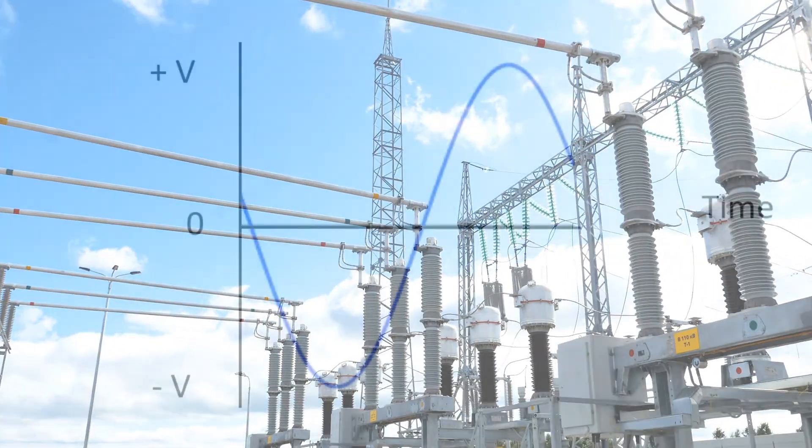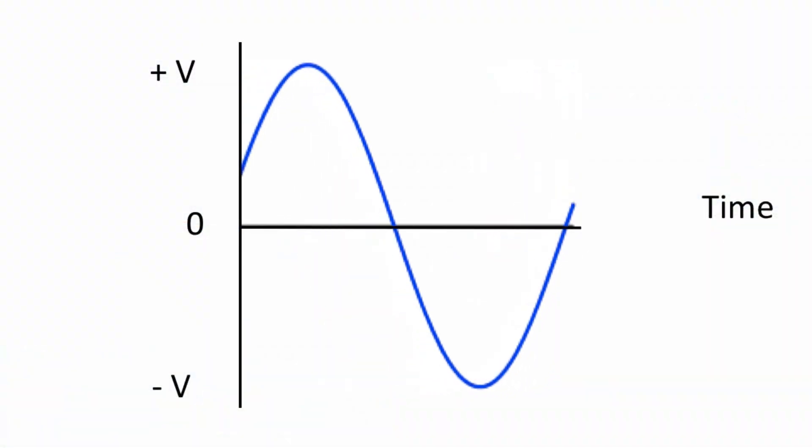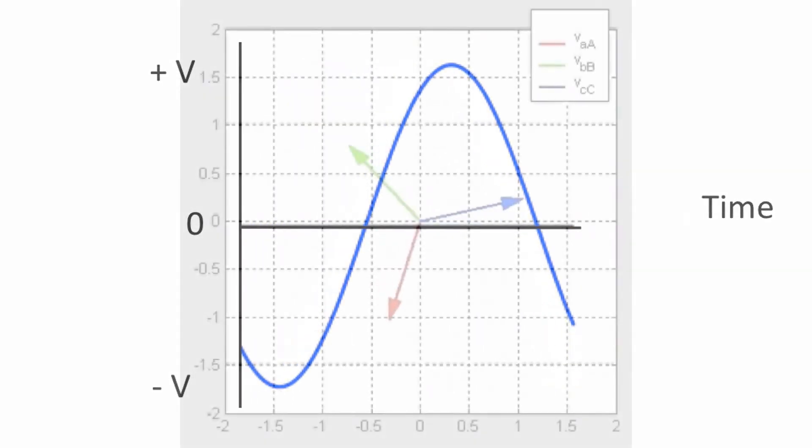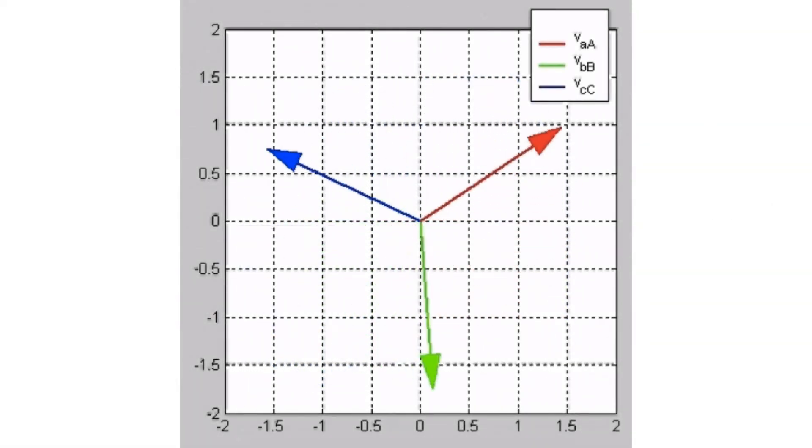You will learn what alternating current, or AC, is, what phase shifting is, and how to describe these AC quantities. You will learn what RMS values are, or root mean square values, and why we use it, where it came from, and its significance.